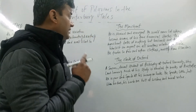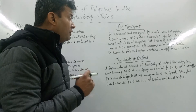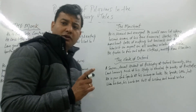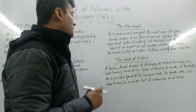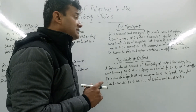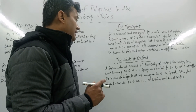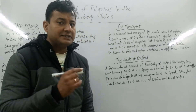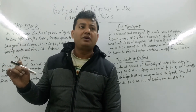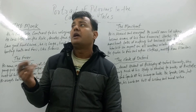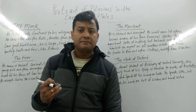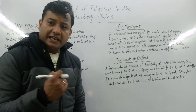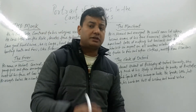The Merchant shows an element of secrecy — he would never let others become aware of his true financial status. He talks of nothing but business and thinks himself an expert on all matters relating to trade. He deals in fur and other clothes, mostly from Flanders. He is shrewd and does not believe in charity, working everything out according to his own perspective.